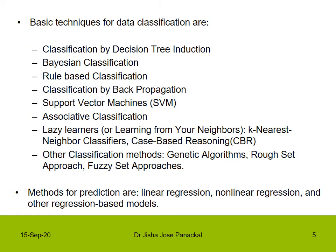The basic techniques for data classification that are going to be studied include: classification by decision tree induction, Bayesian classification, rule-based classification, classification by back propagation, support vector machines, associative classification, lazy learners which include k-nearest neighbor classifiers, and case-based reasoning (CBR). Other classification methods include genetic algorithms and rough set approaches. For prediction, we will cover linear regression, non-linear regression, and other regression-based models.